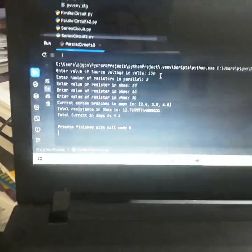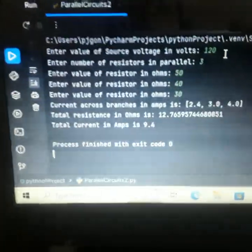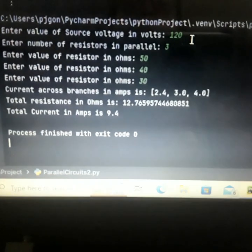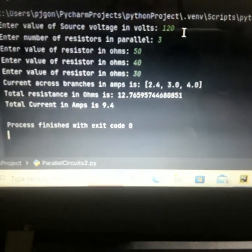So the current across branches - it gives me the current across branches in amps is 2.4 for the first branch, 3.0, and 4.0. We can check that and that's exactly what I got: 2.4, 3.0, 4.0.